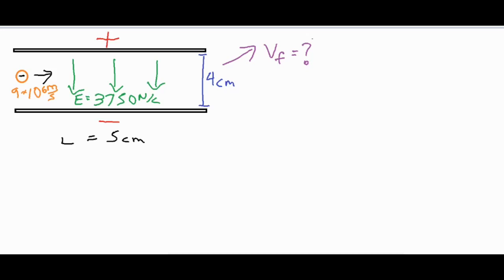Conceptually, we have an electron that has an initial velocity of 9 times 10 to the 6 meters per second. As it's moving to the right, its horizontal motion is going to stay constant because there are no forces in the horizontal direction. But because the electric field is applying an electric force in the vertical direction, and for the negatively charged particle it's going to be pushing it up against the direction of the electric field, that force is going to cause it to accelerate in the vertical direction.